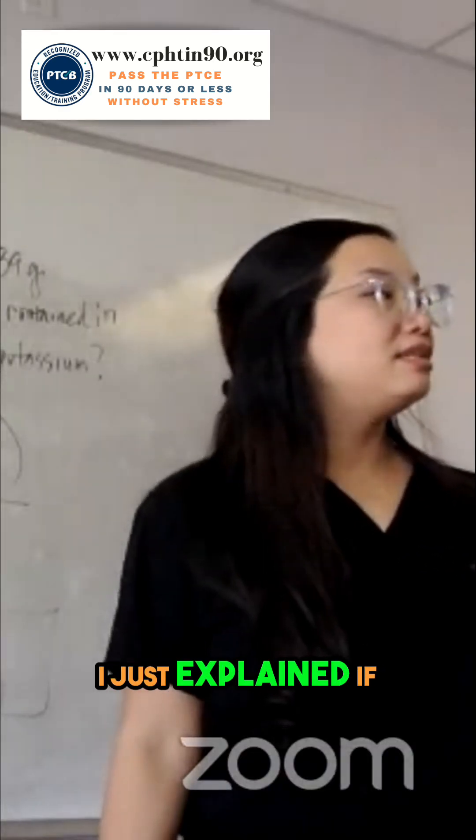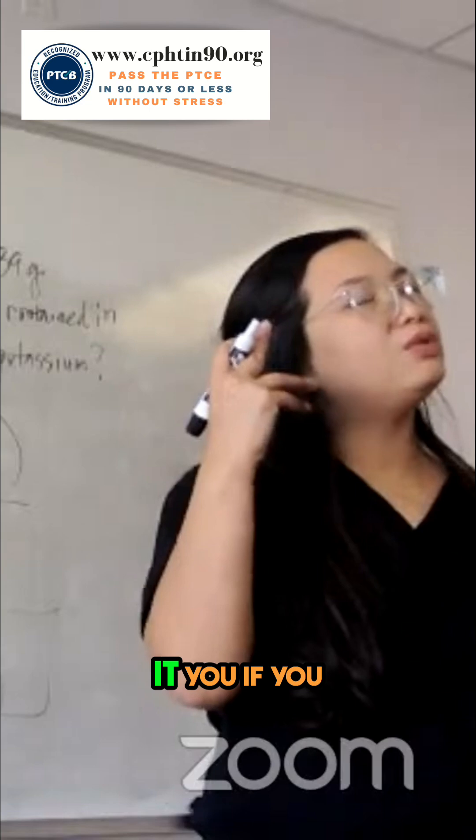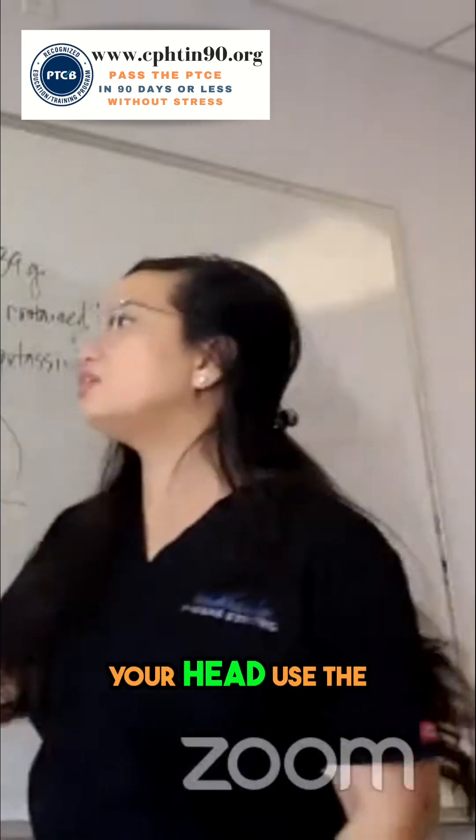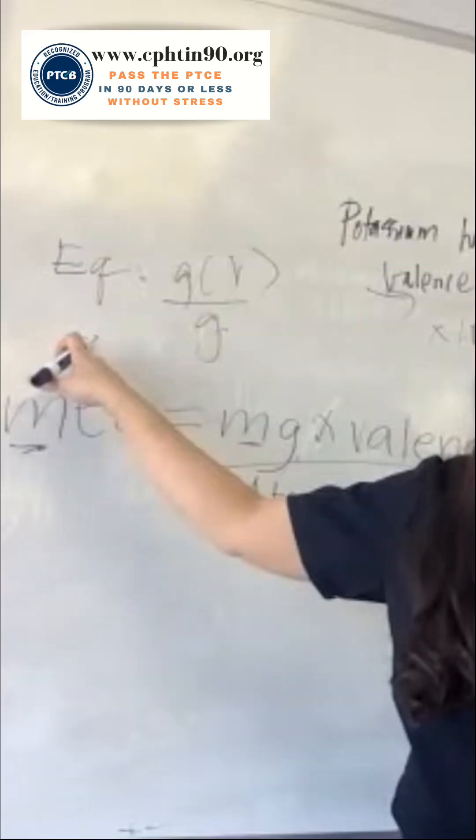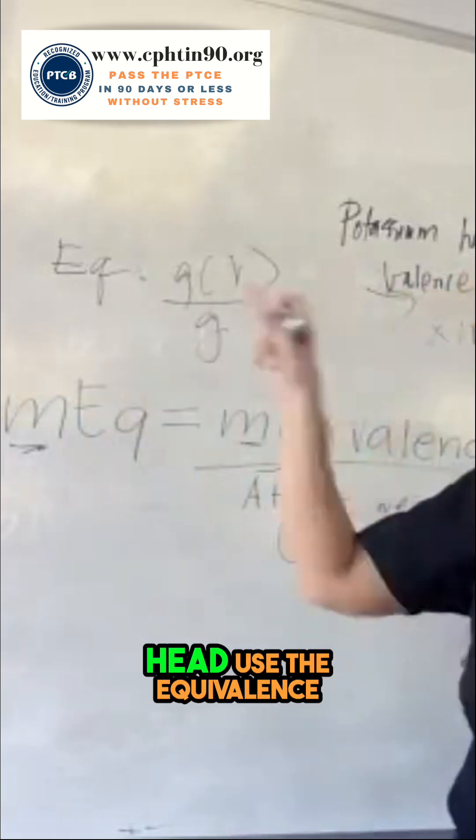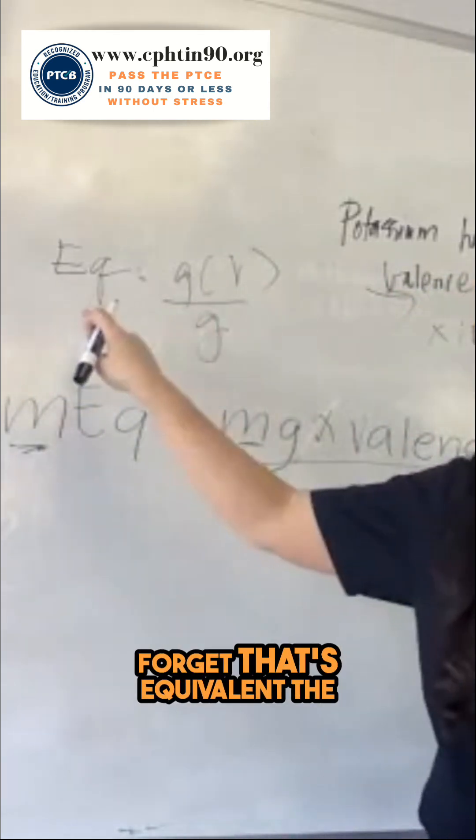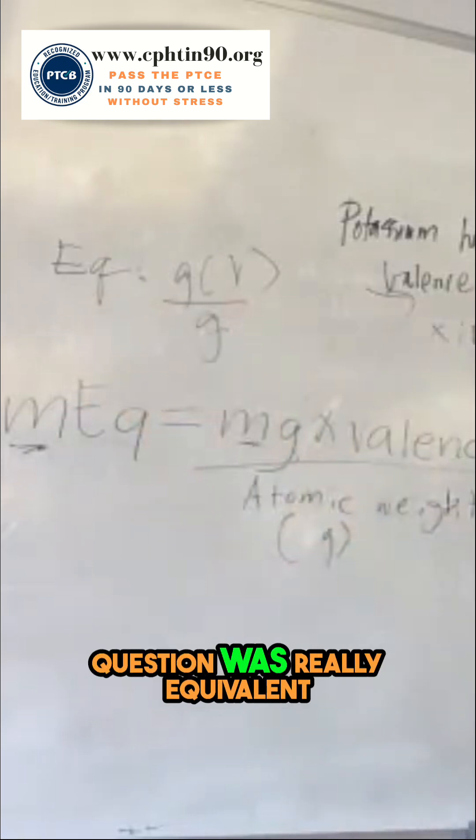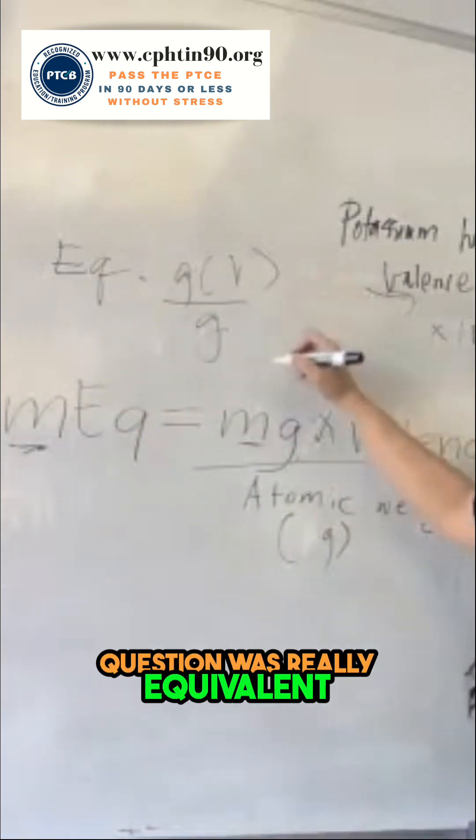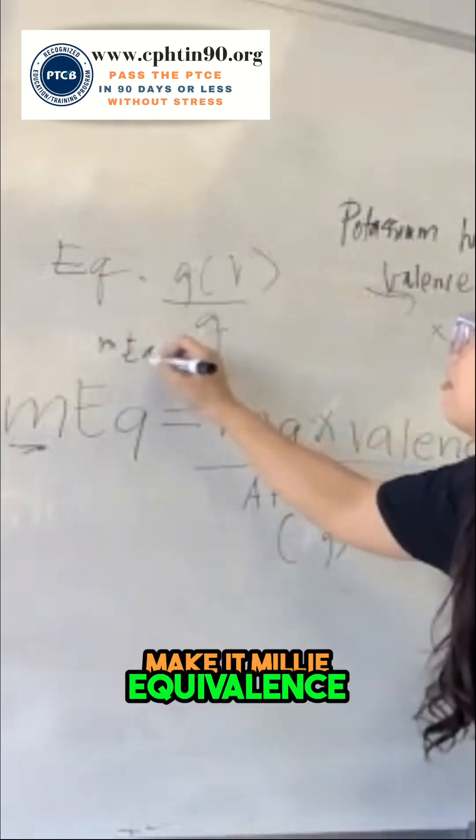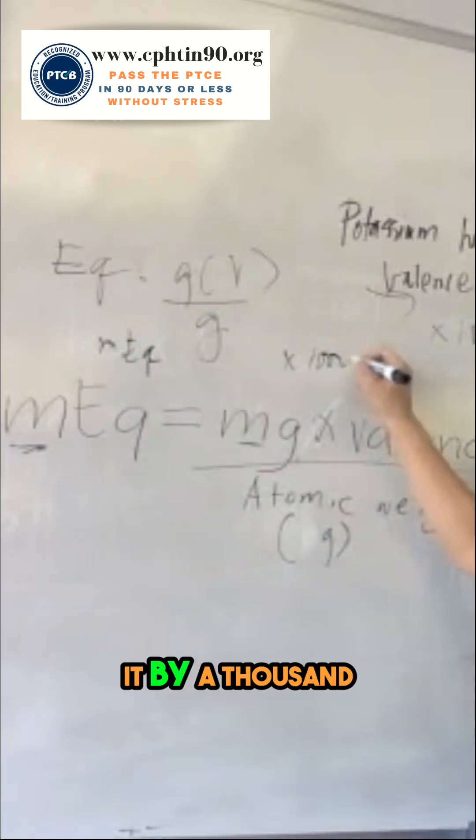If you want it to click in your head, use the equivalence formula. But do not forget that's equivalent. The question was really equivalent, so for you to make it milliequivalents, you have to multiply it by a thousand.